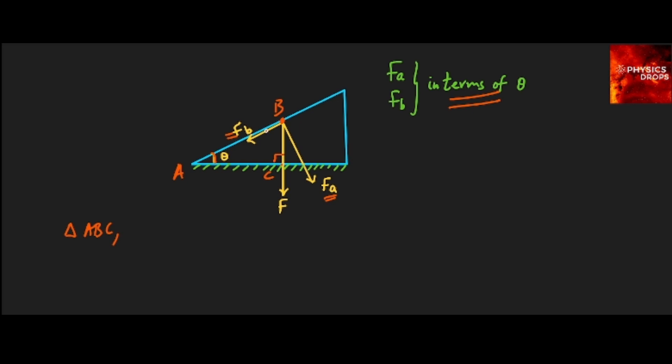So this angle at that point B within the triangle ABC is 180 minus 90, which is at C, plus theta. Because the sum of the angles of a triangle is 180, so I am subtracting this 90 degree here and this theta here from 180. This gives 180 minus 90 is 90 minus theta. So this angle here is 90 minus theta degrees.